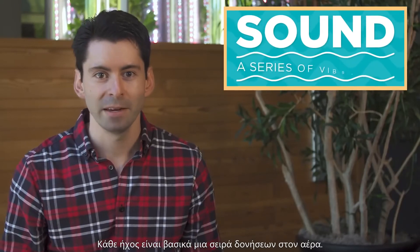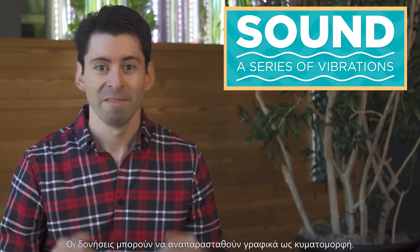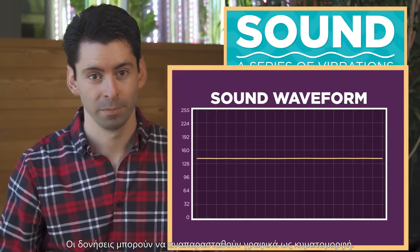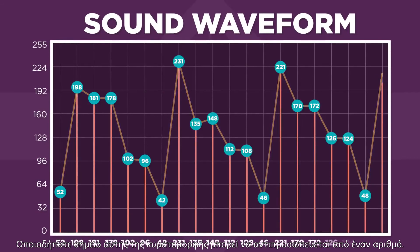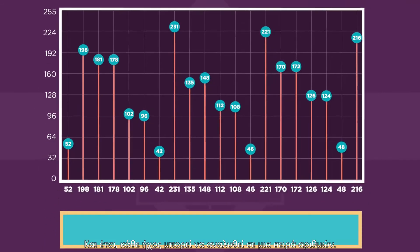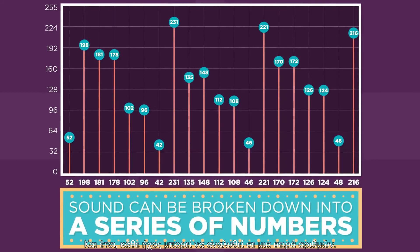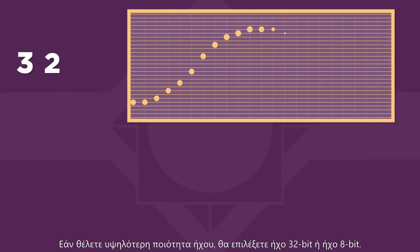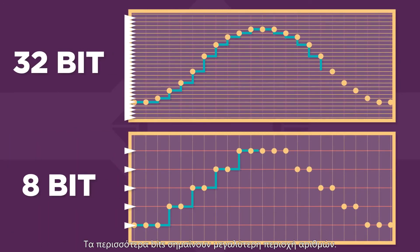Every sound is basically a series of vibrations in the air. Vibrations can be represented graphically as a waveform, and any point on this waveform can be represented by a number. This way, any sound can be broken down into a series of numbers. If you want higher quality sound, you would pick 32-bit audio over 8-bit audio — more bits means a higher range of numbers.